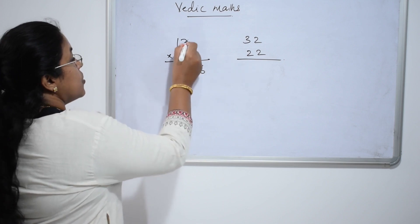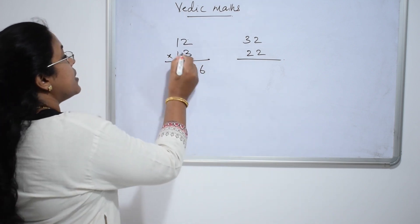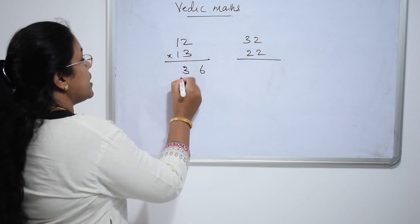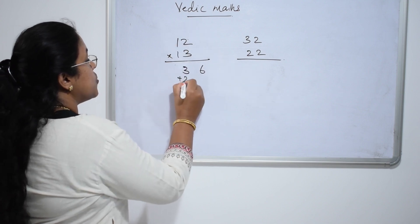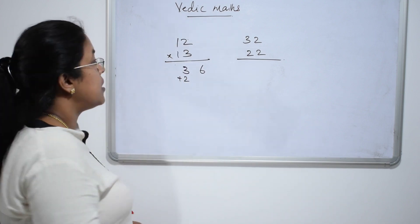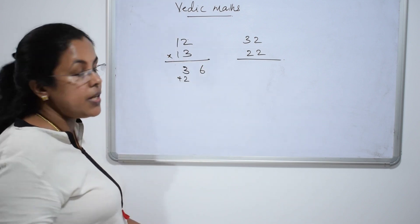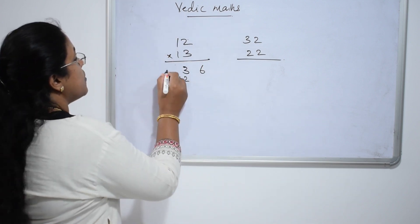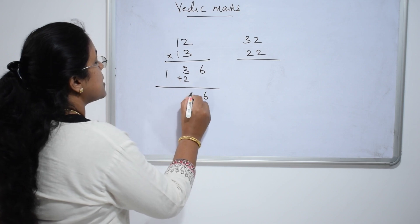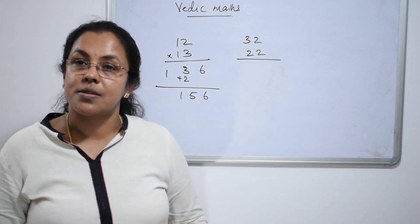Now cross multiply the numbers and add: 3 ones are 3, and 2 ones are 2. Now multiply the tens digits: 1 into 1 is 1. So the final answer is 156.